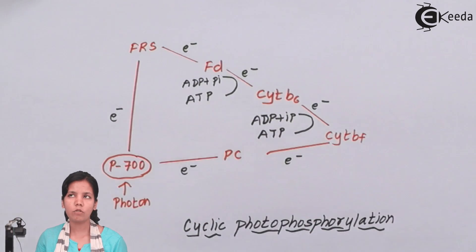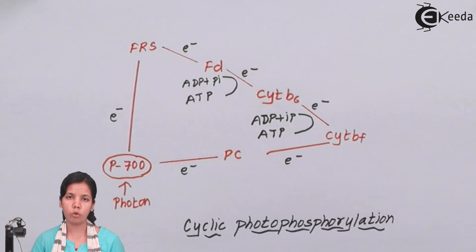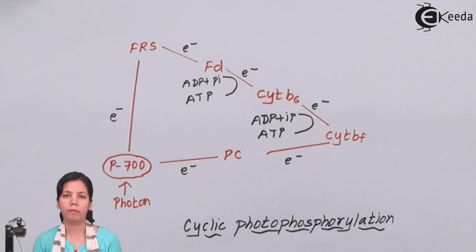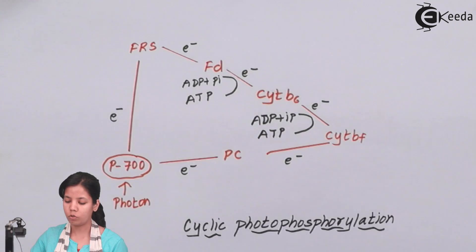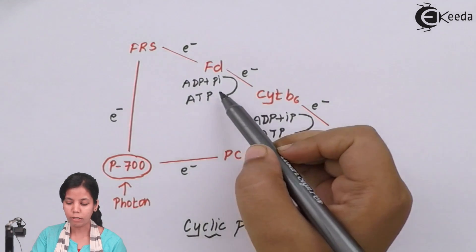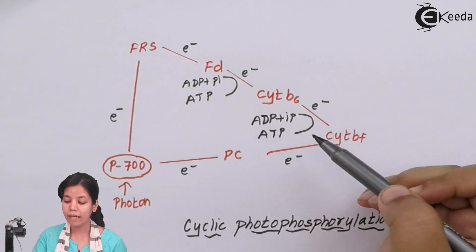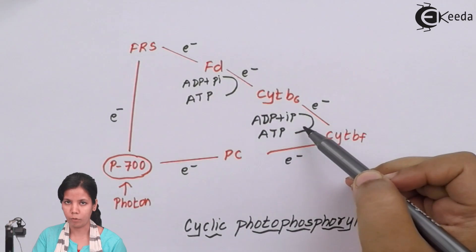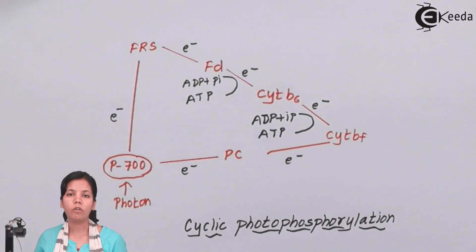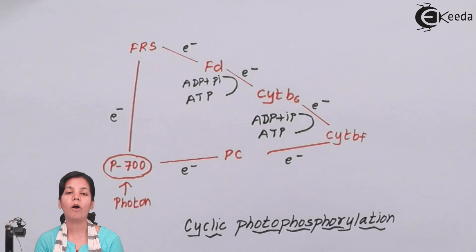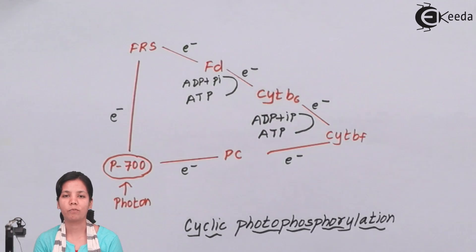The significance of cyclic photophosphorylation is that two ATP molecules are generated — one ATP molecule here and another ATP molecule there. I hope you are all clear with the concept of cyclic photophosphorylation. Thank you.